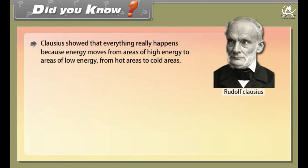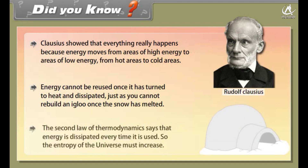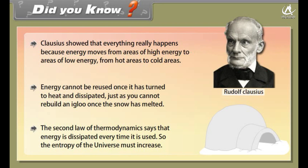Did you know? Clausius showed that energy moves from areas of high energy to areas of low energy — from hot areas to cold areas. Energy cannot be reused once it has turned to heat and dissipated, just as you cannot rebuild an igloo once the snow has melted. The second law of thermodynamics says that energy is dissipated every time it is used, so the entropy of the universe must increase.